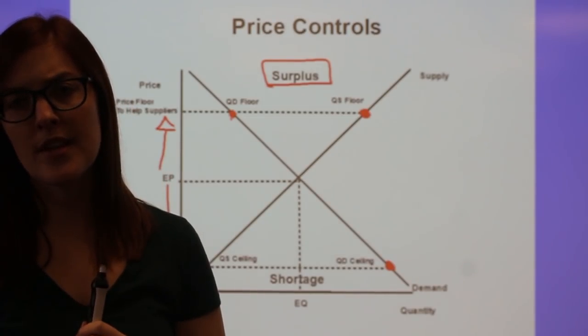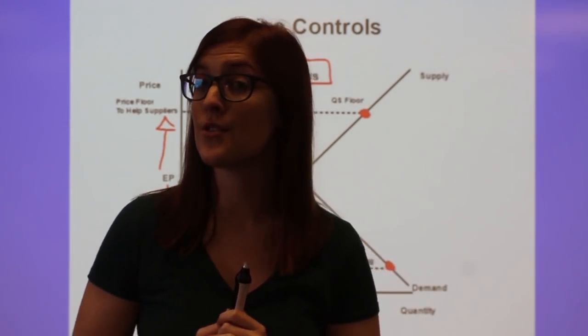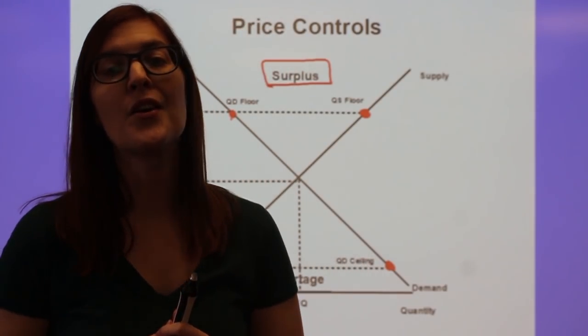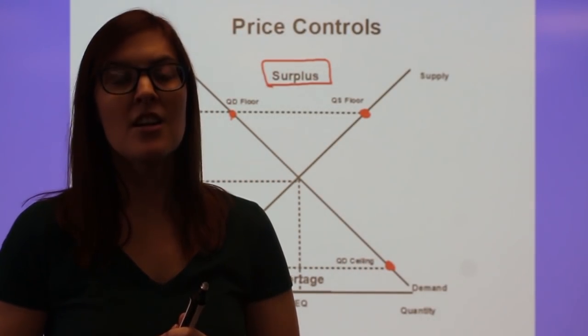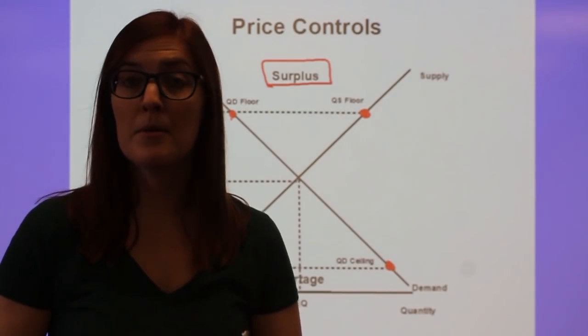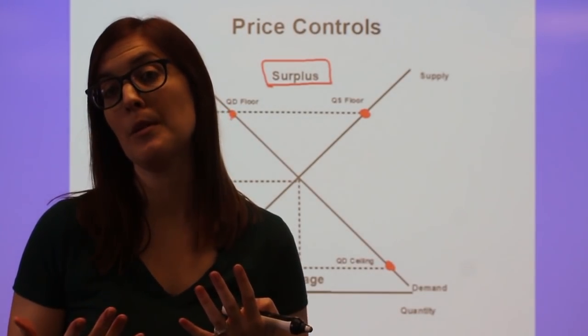One additional thing with that, sometimes the government can create a shortage or surplus by doing what's known as artificial price controls. So these are government set minimums and maximum prices that end up creating disequilibrium.